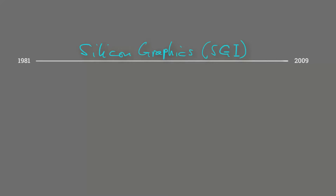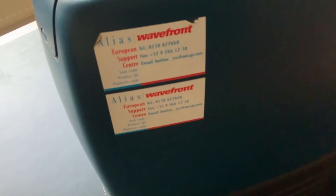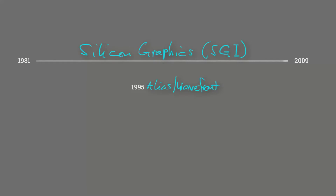Silicon Graphics was founded in 1981. Between 1984 and 1997, the Californian company grew from 5 million to almost 4 billion dollars in annual revenues. In 1995, Silicon Graphics purchased two companies specializing in special effects for films such as Star Wars and industrial designs for cars: Alias in Toronto and Wavefront in Santa Barbara — that's why that support label is on my O2, as they became one company.